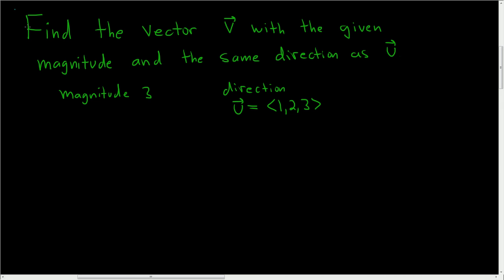Find the vector v with the given magnitude and the same direction as u. Let's go ahead and work it out.